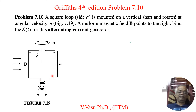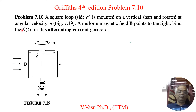This is the figure. We have a square loop which is rotating at an angular velocity omega, and each side of this loop is A. We have the magnetic field applied, and we have to find the induced EMF.